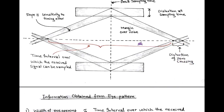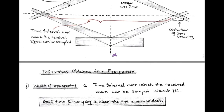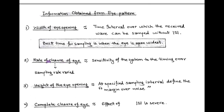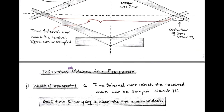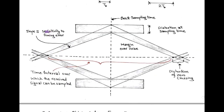The next information is the sensitivity to timing error. The sensitivity of the PAM system to timing error Δt is represented by the rate of closure of the eye and can be obtained by varying the sample rate. The sensitivity to timing error is represented by the slope of the eye pattern, as shown in the figure.